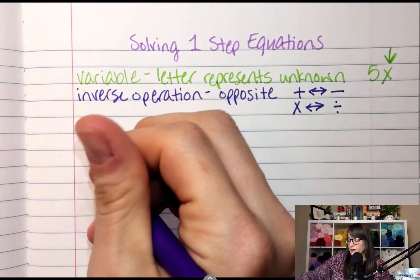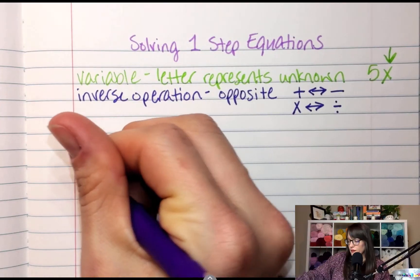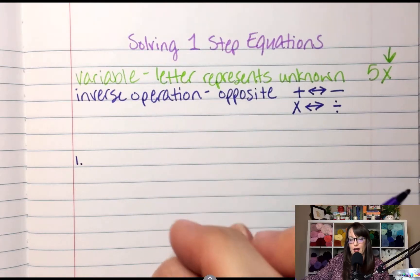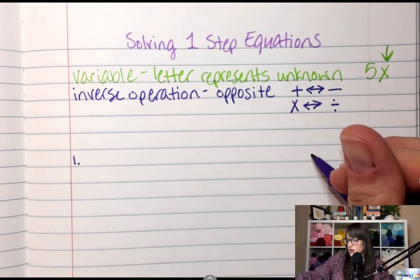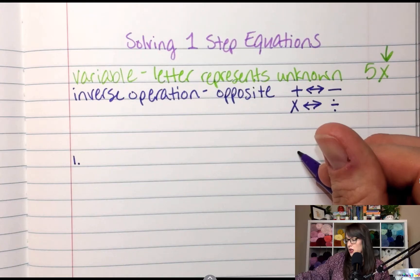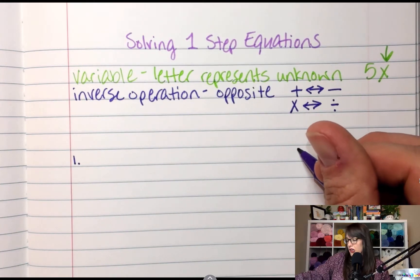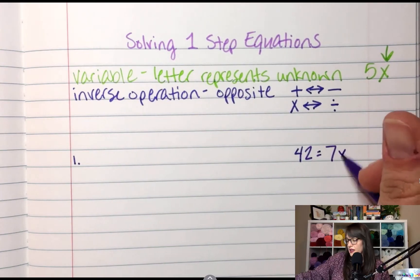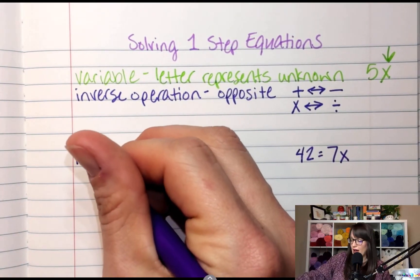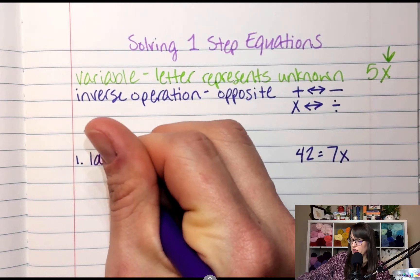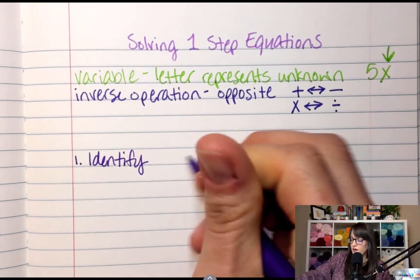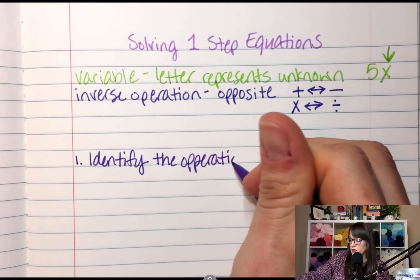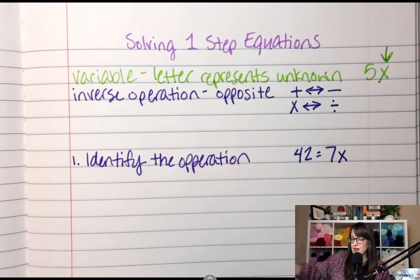Step one: what operation is between the number and the variable? So let's look at an example. If we had 42 equals 7X.